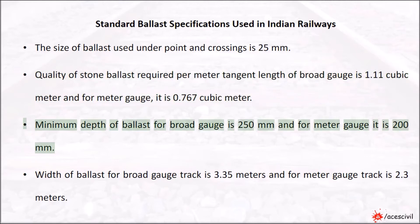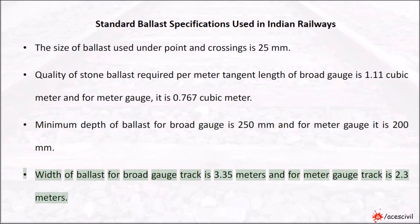Minimum depth of ballast for broad gauge is 250 mm and for meter gauge it is 200 mm. Width of ballast for broad gauge track is 3.35 meters and for meter gauge track is 2.3 meters.